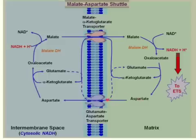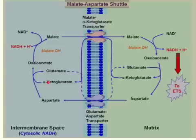The aspartate goes through the glutamate-aspartate shuttle and combines with alpha-ketoglutarate outside, reforming oxaloacetate and glutamate. The glutamate then goes through the glutamate-aspartate transporter and is recycled back to reform aspartate. All of the intermediates that go through the cycle are recycled depending on which side of the membrane they are on. The only net result is transport of reducing equivalents into the mitochondrial matrix.